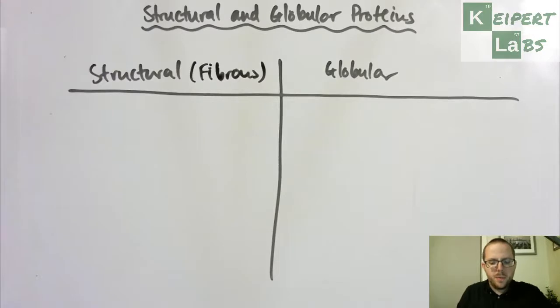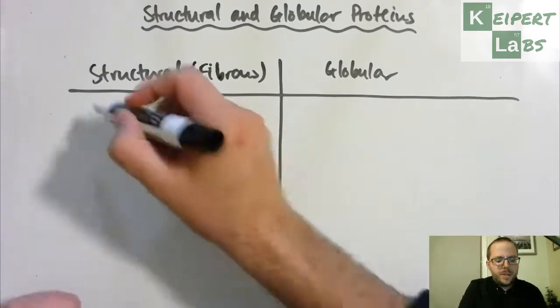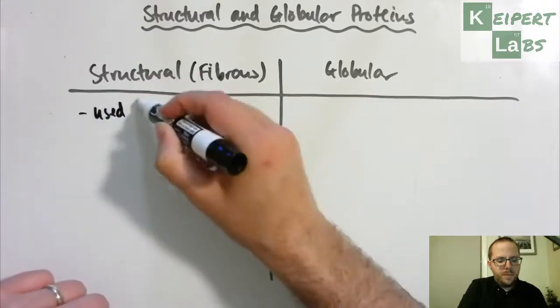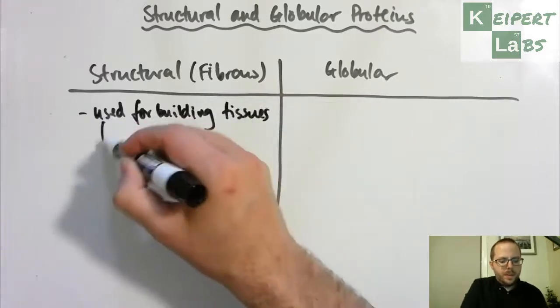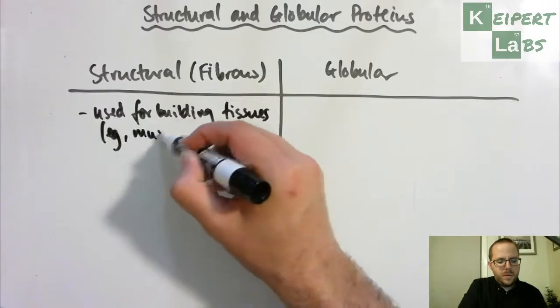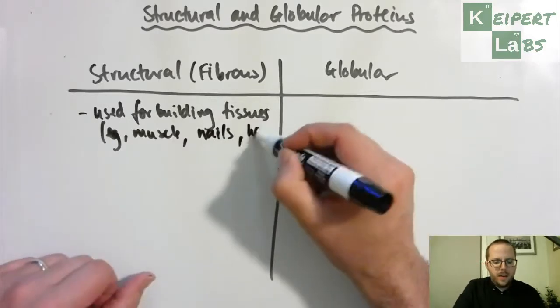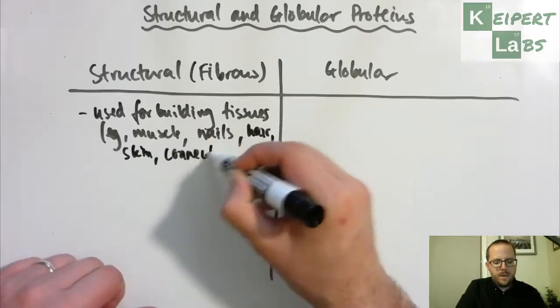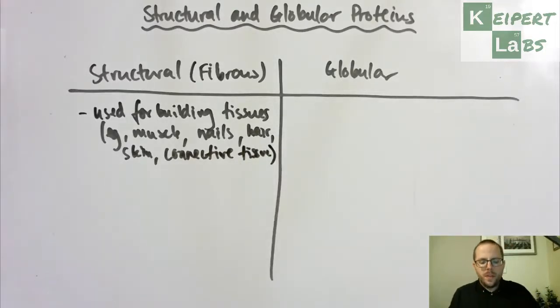So ultimately it comes down to their function. They're used for building body tissues. So for example, this includes muscle, nails like your finger and toenails, hair, skin, connective tissue, etc. So that's what it's used for and that's going to then kind of follow on what we're going to see in a minute.